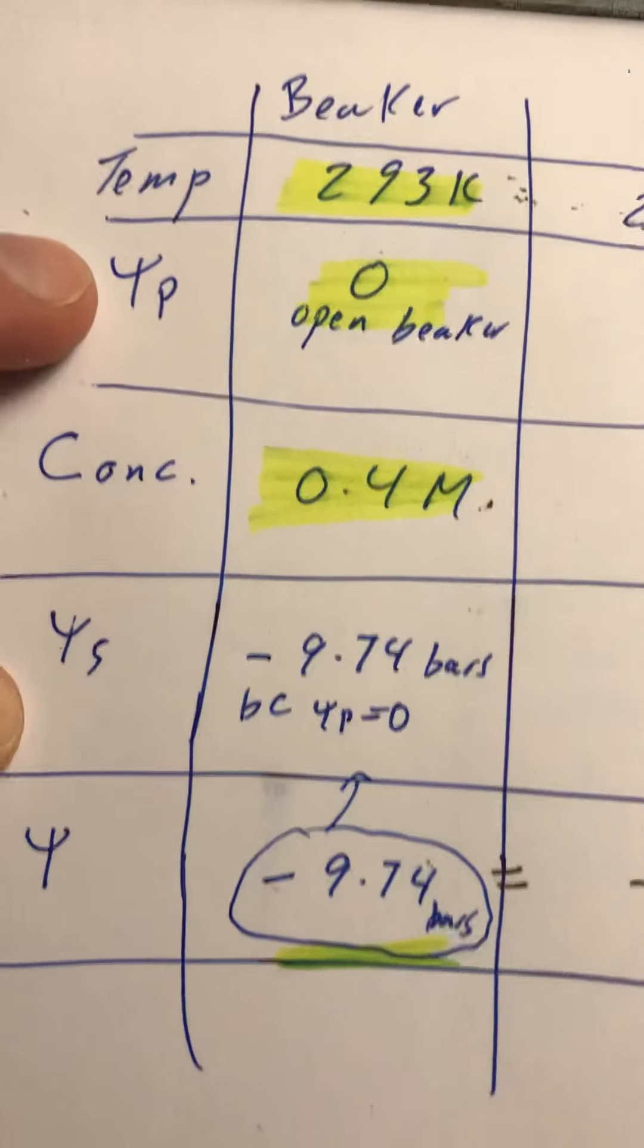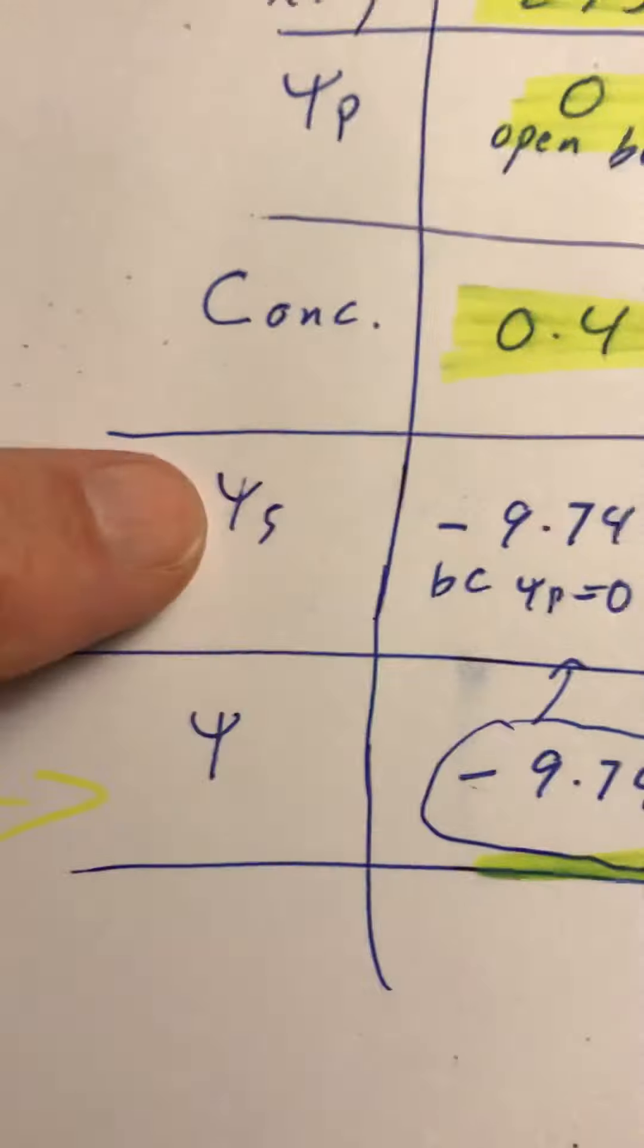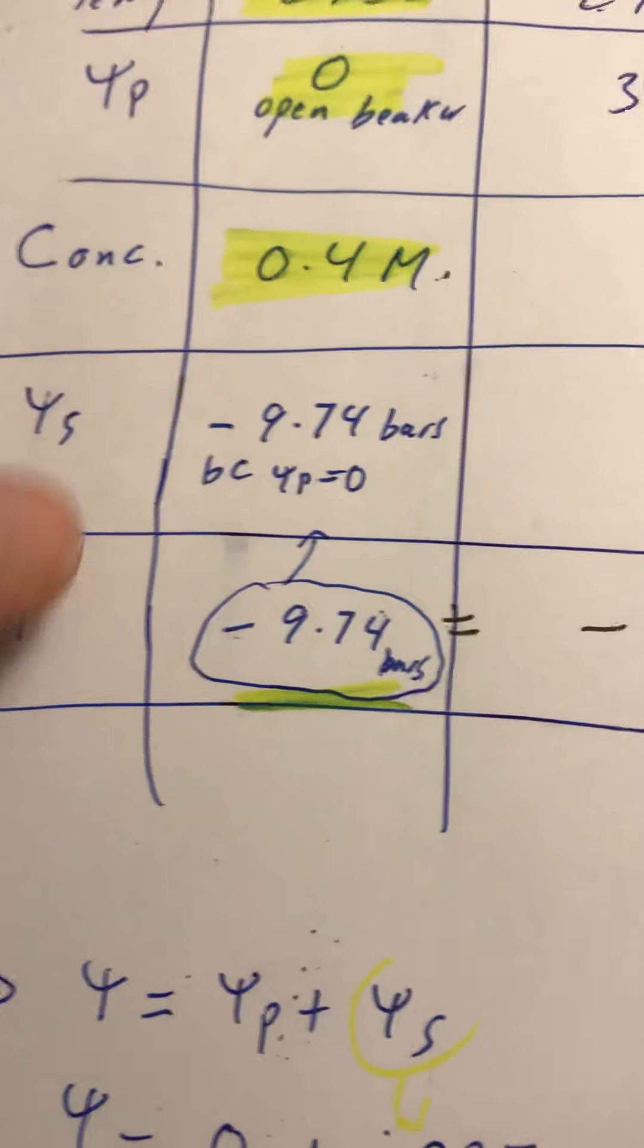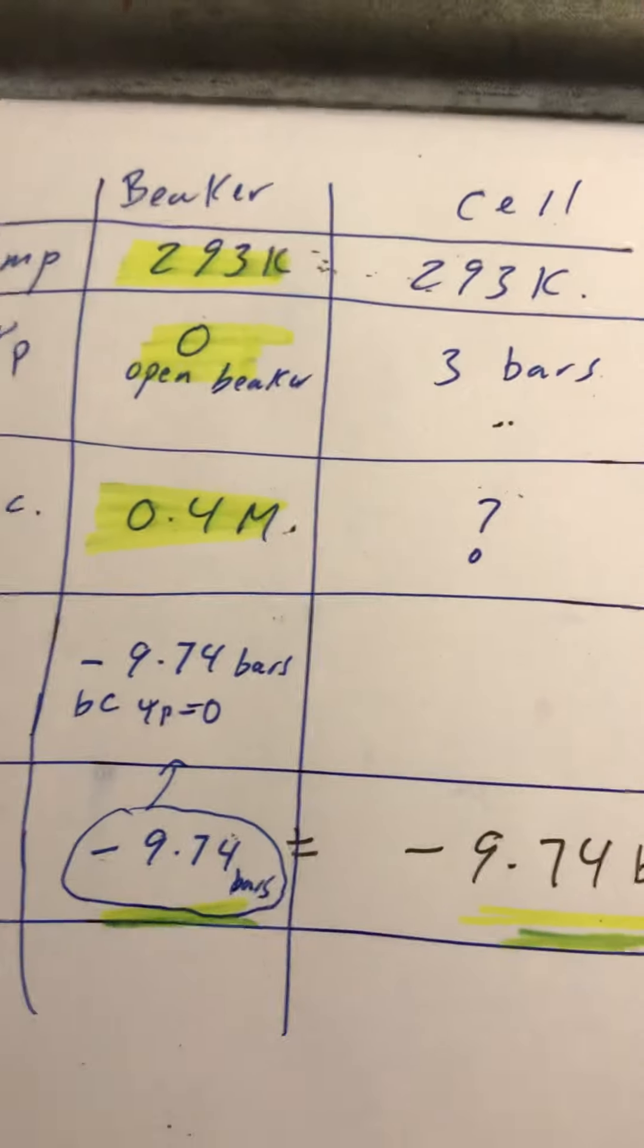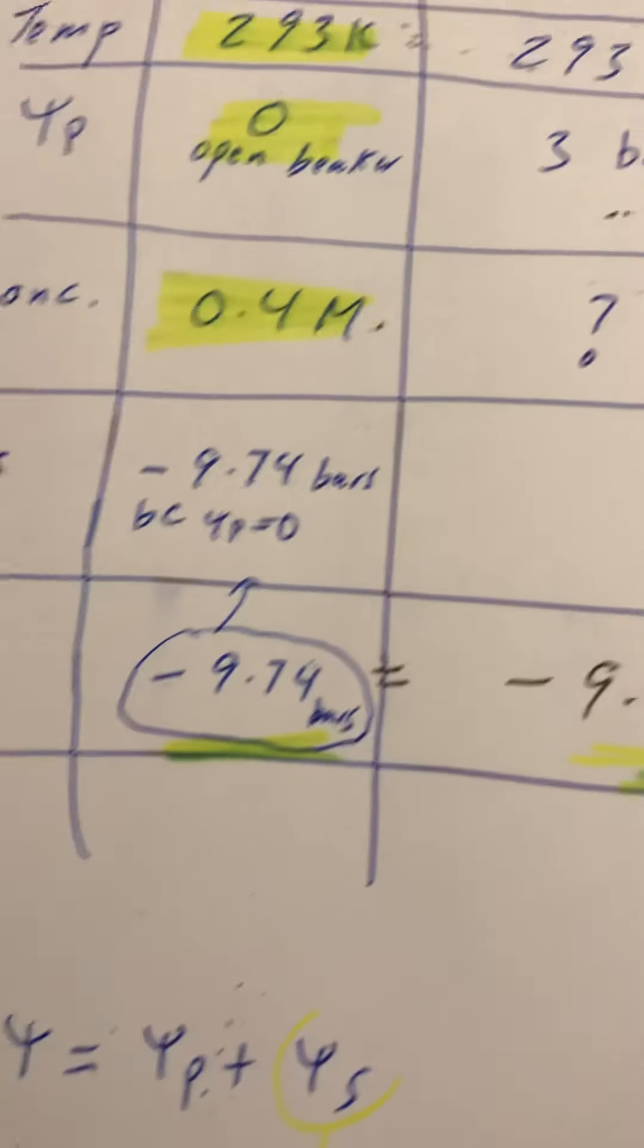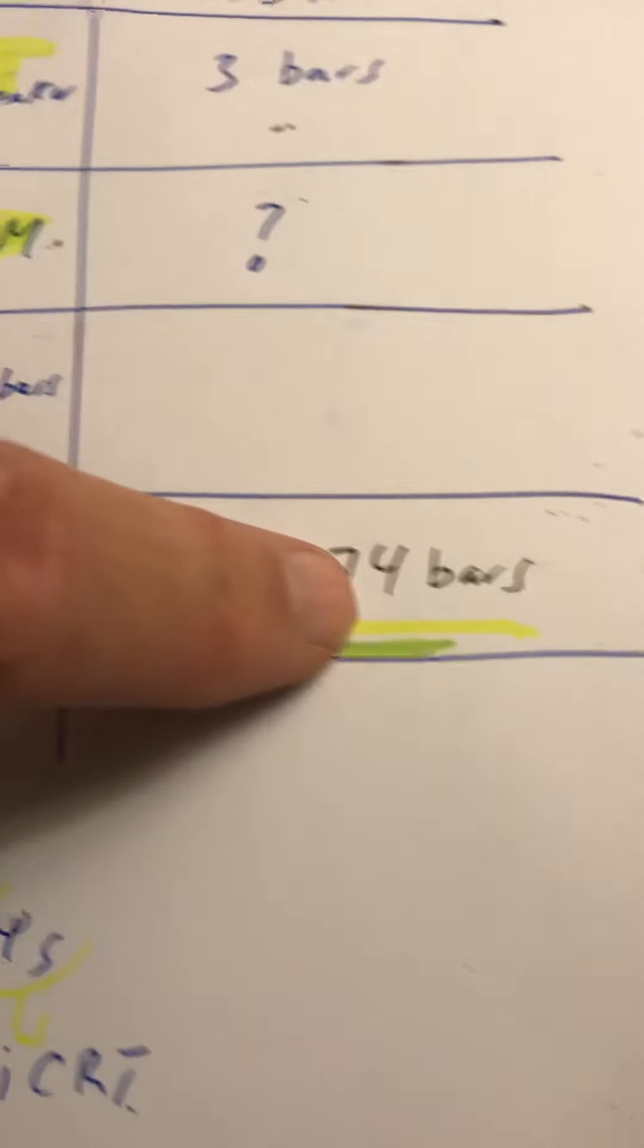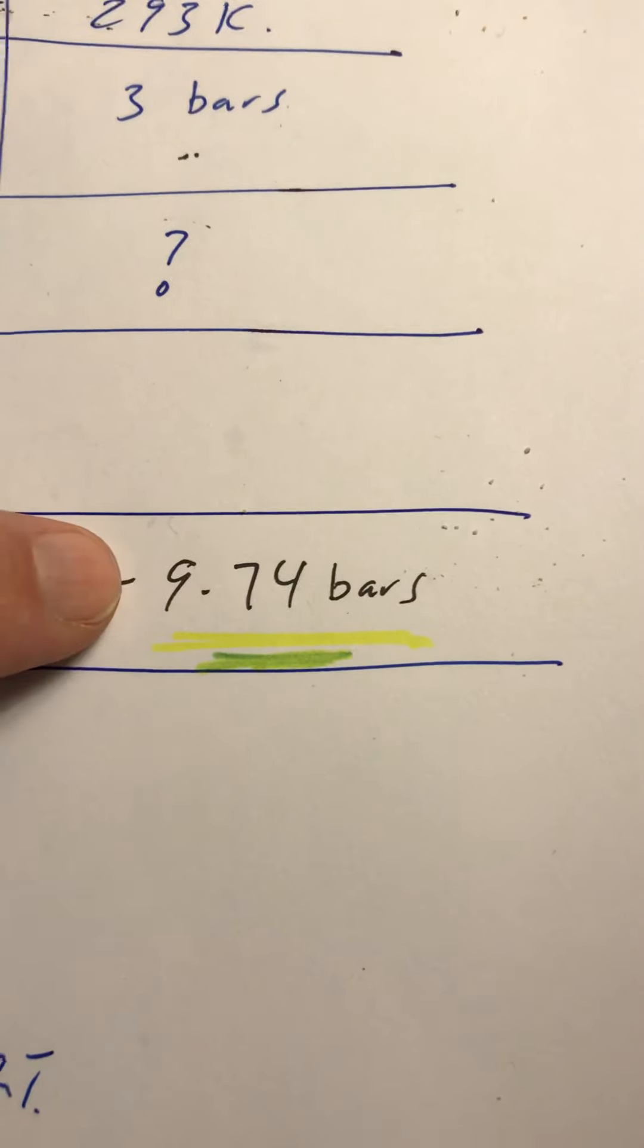I know psi, and because I know psi, I know psi S, because psi P is zero. So psi equals psi S, they're the same. If the problem says that the beaker and the cell are in equilibrium, which means that water potential psi for both of them is the same.